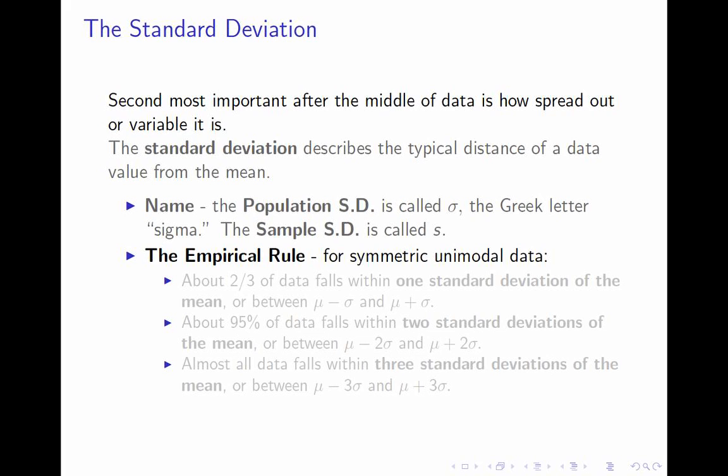The first version: about two-thirds of the data falls within one standard deviation of the mean. That means two-thirds of your data points are a distance of sigma — the standard deviation — from the mean mu or less. Or to put it another way, they fall between mu minus sigma and mu plus sigma.